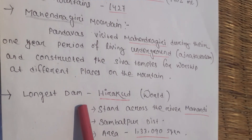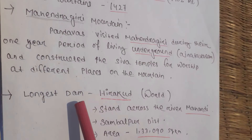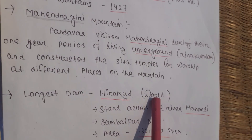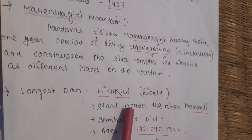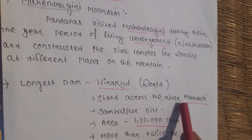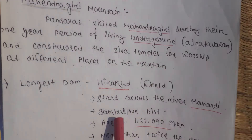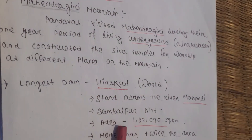The longest dam of Odisha is Hirakud Dam. It is also the longest dam in the world. It stands across the river Mahanadi in Sambalpur district.